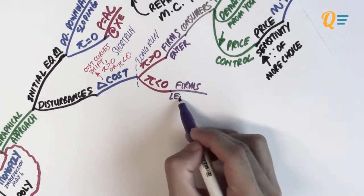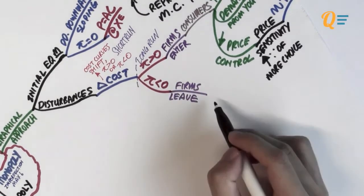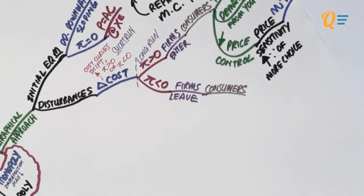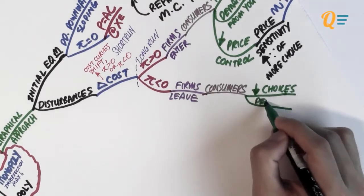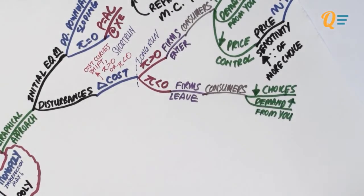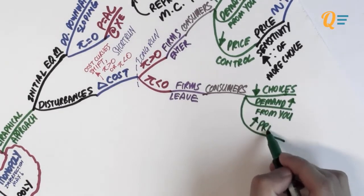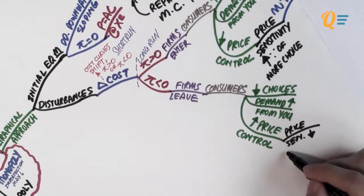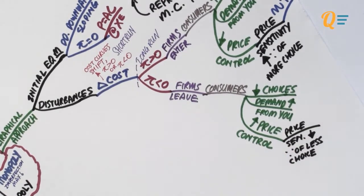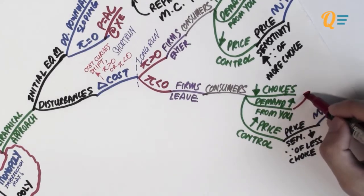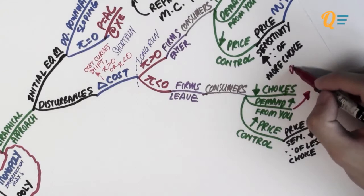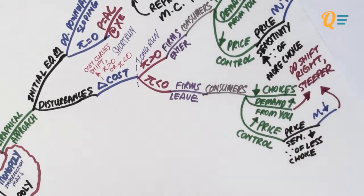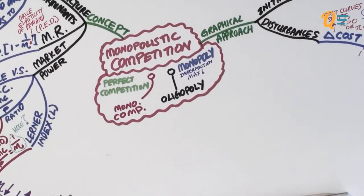In the scenario of negative profits in the short run, in the long run firms will leave the market. Consumers now have fewer choices because there are fewer firms offering differentiated goods, so demand to each remaining firm increases. With fewer firms, you have more of the market pie and more price control. Consumers are less price sensitive because they don't have as many alternatives, so price elasticity of demand becomes more inelastic. The demand curve shifts to the right and becomes steeper due to more inelastic demand.